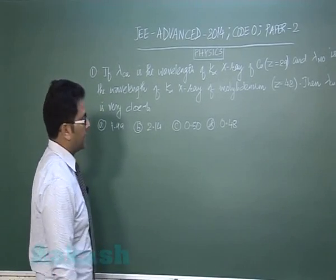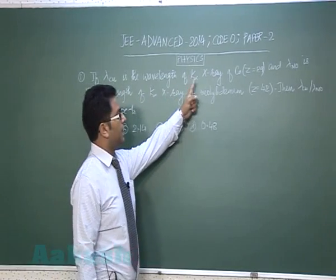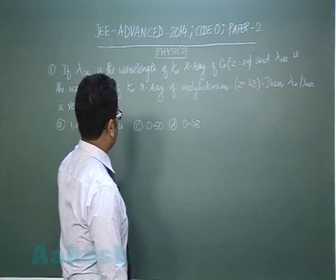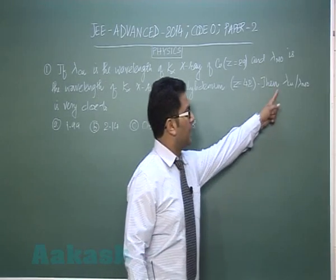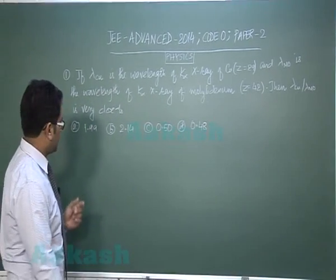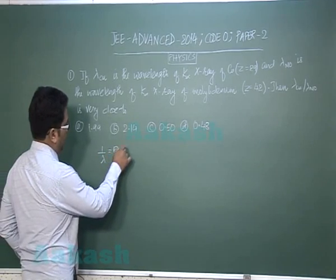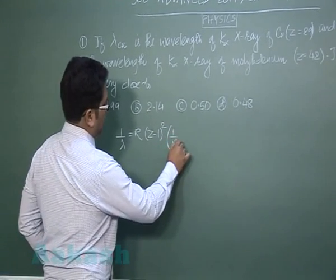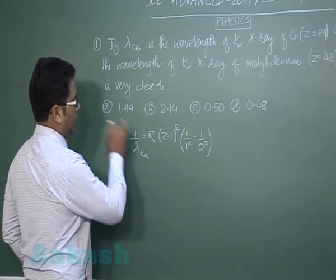The first question is from Modern Physics, specifically from X-rays. Lambda_copper is the wavelength of K-alpha X-ray of copper, and lambda_molybdenum is the wavelength of K-alpha X-ray of molybdenum. Z is given, and we need to find lambda_copper divided by lambda_molybdenum. The formula is: 1/lambda = R(Z-1)² × (1/1² - 1/2²), which gives the wavelength for K-alpha.